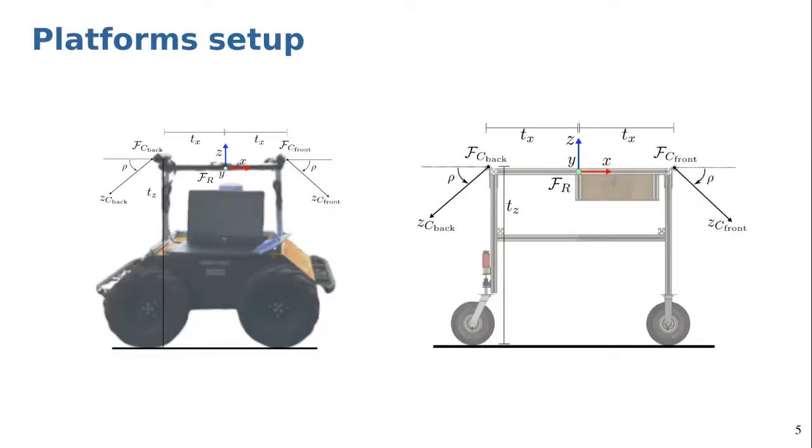We consider a mobile robot platform capable of seamlessly moving in forward and backward directions. Our platforms are equipped with two cameras symmetrically in front and back which are tilted toward the ground indicated by parameter rho.